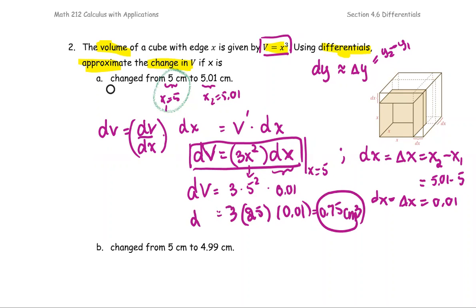This one means the change in volume, if the size is changing by 0.01 centimeters, will be about 0.75 cubic centimeters.